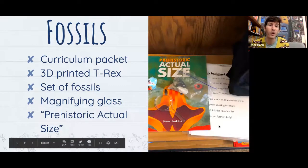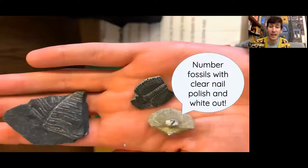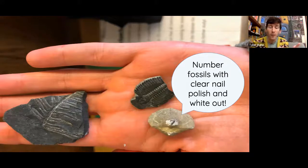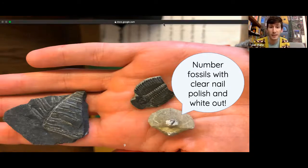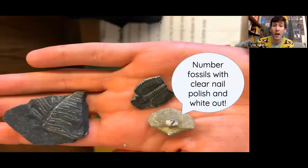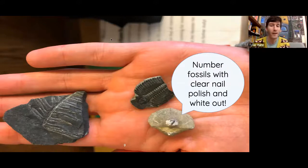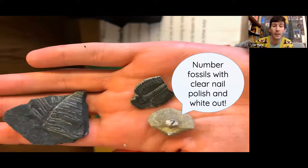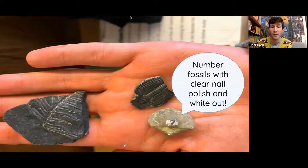The fossils backpack includes a curriculum packet, a 3D-printed T-rex, a set of real fossils, and a fossil activity from the natural history museum — they just said 'use it, you have full permission.' It also has a prehistoric actual-size book. For processing fossils or rocks for circulation, a tip: put a layer of clear nail polish, then white-out, then another layer of clear nail polish — then write your numbers. It stays permanently.